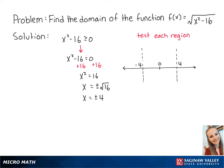Now that we know that the function is equal to 0 when x is equal to plus or minus 4, we need to test whether the square root will be negative or positive when x is less than negative 4, between negative 4 and 4, and when x is greater than 4.